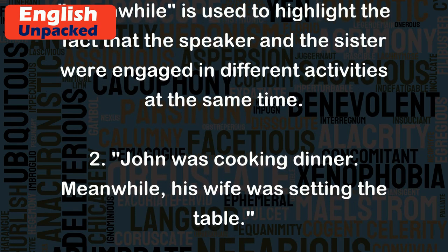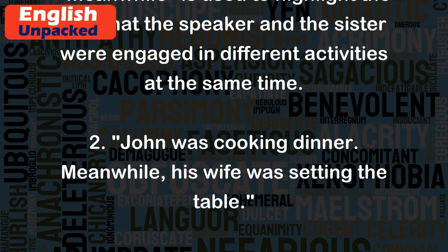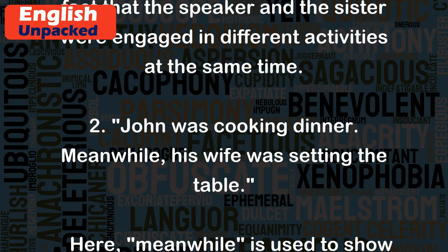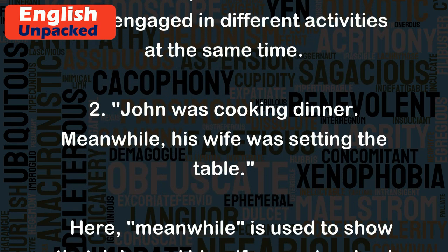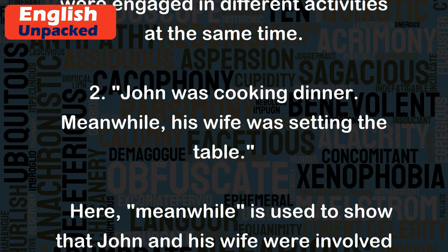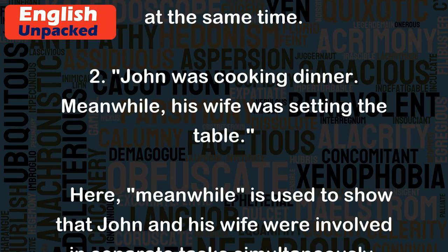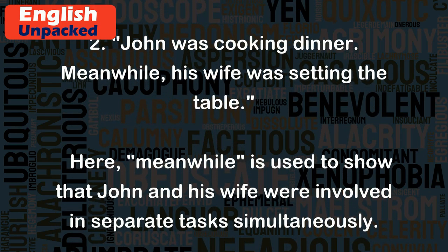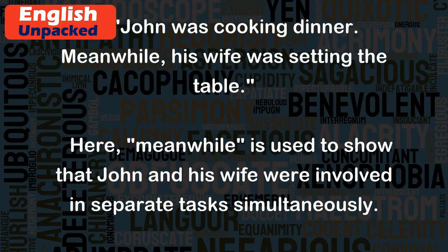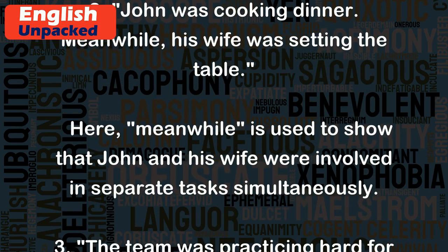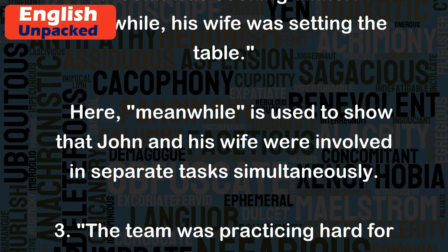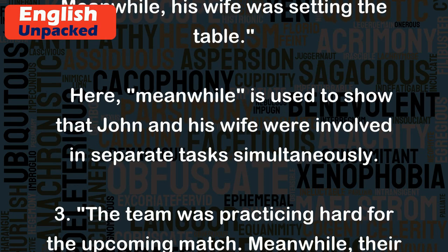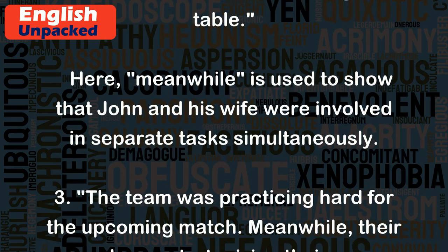2. John was cooking dinner. Meanwhile, his wife was setting the table. Here, 'meanwhile' is used to show that John and his wife were involved in separate tasks simultaneously.